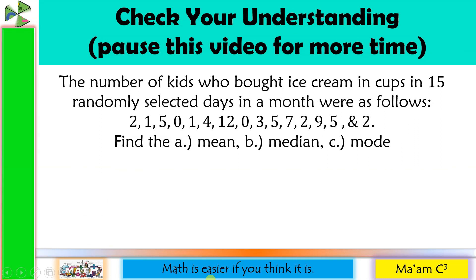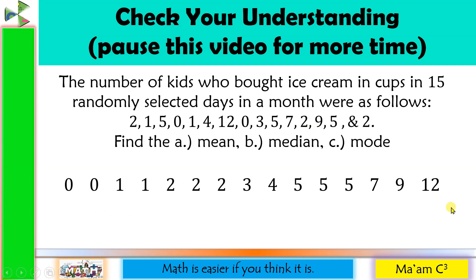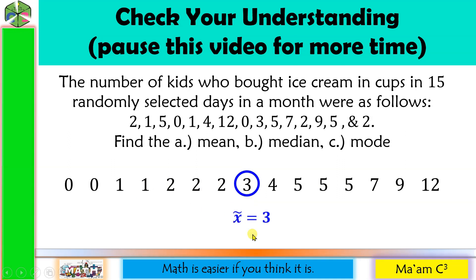For the median: arrange in ascending order — 0, 0, 1, 1, 2, 2, 2, 3, 4, 5, 5, 5, 7, 9, 12. There are 15 values (odd). 15 divided by 2 is 7.5, round up to 8. So we choose the 8th value. Counting: 1, 2, 3, 4, 5, 6, 7, 8 — the 8th value is 3. So the sample median x-tilde equals 3.